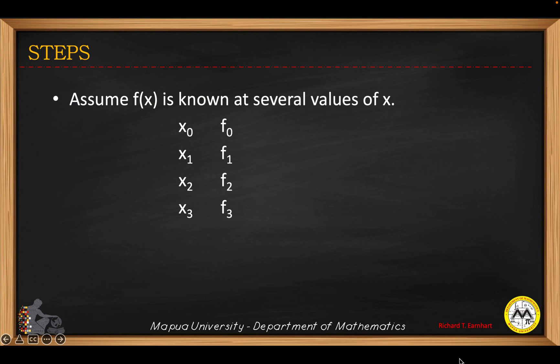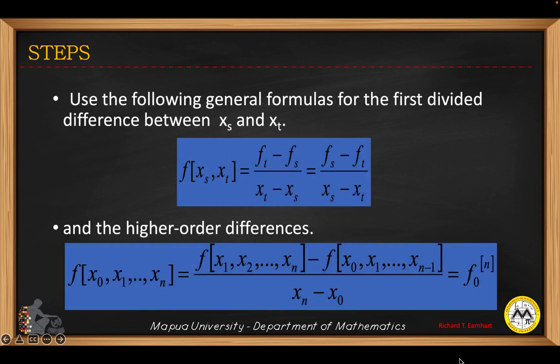So we may have the following steps. Assume the function f(x) to be known at several values of x, and then use the following general formulas for the first divided difference between two values of x, let's say x sub s and x sub t.